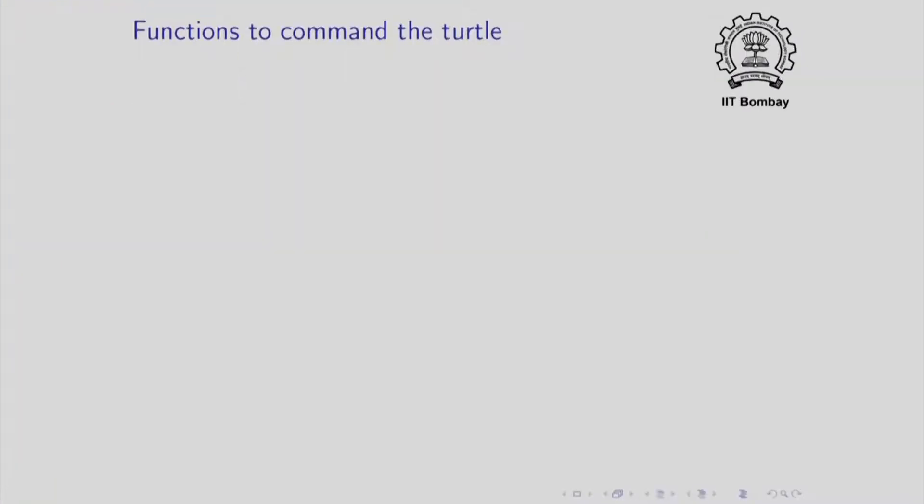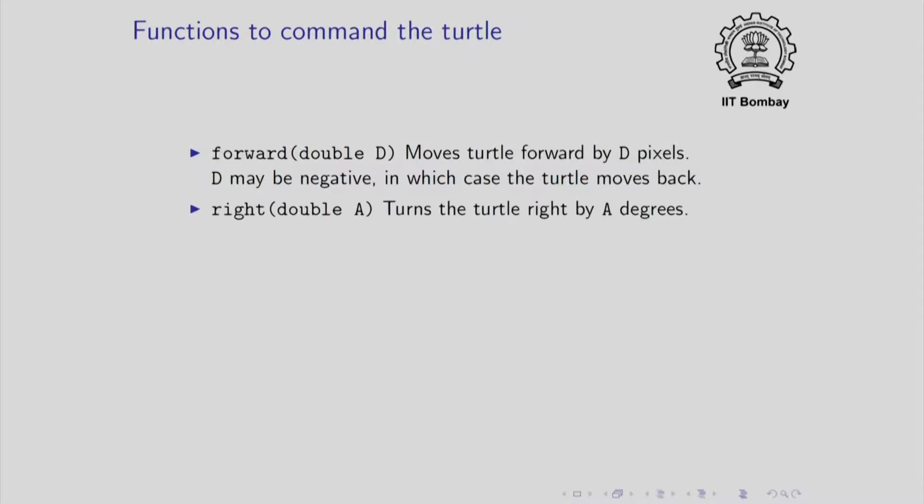Now I will talk about other functions besides the ones that you have seen, which can also be used to command the turtle. Well, you have already seen forward, but an important point over here is that D may be given negative. How much to move forward can be given negative, in which case the turtle moves back. Right is also something that you saw. So the argument to right tells the turtle how much to turn. So in degrees. You have a similar command which tells the turtle to turn, but this time the turtle is going to turn left.